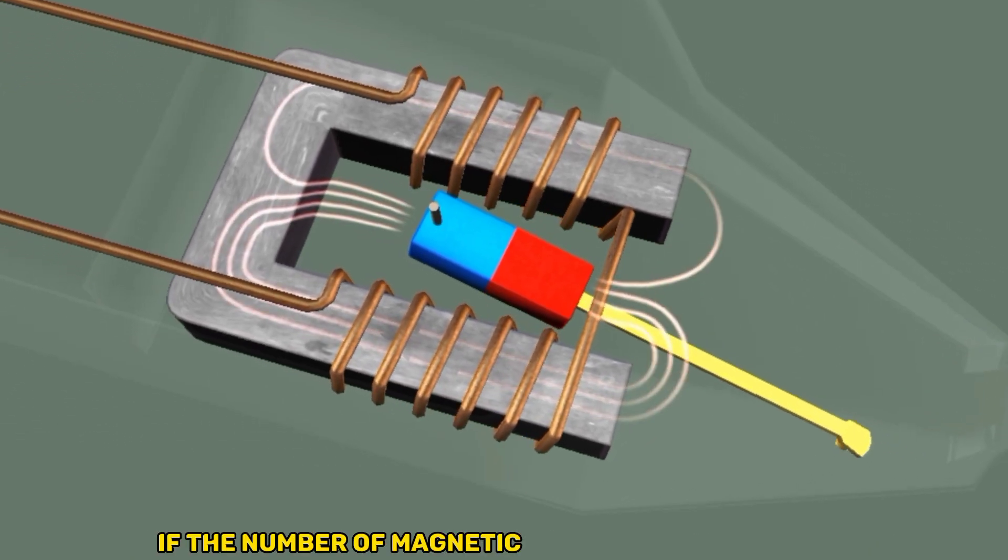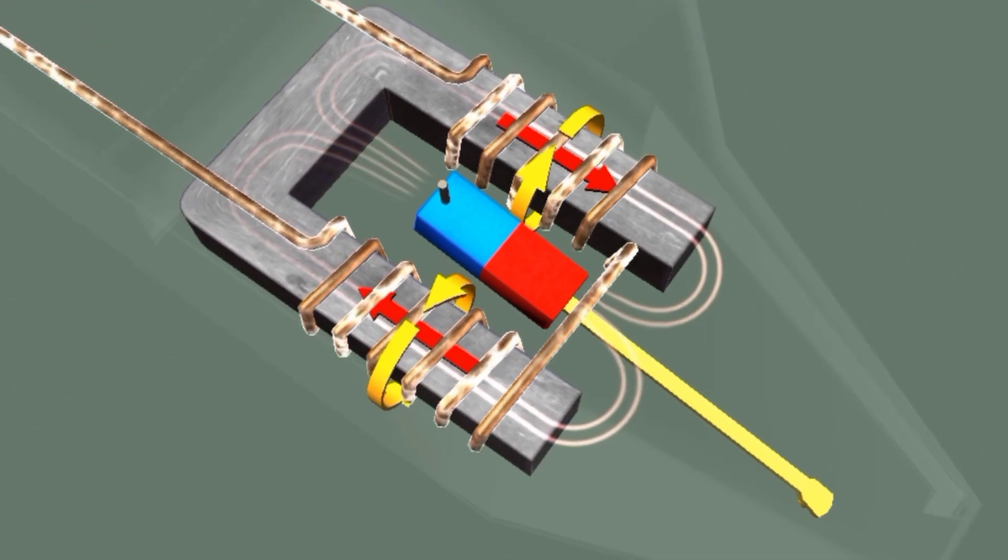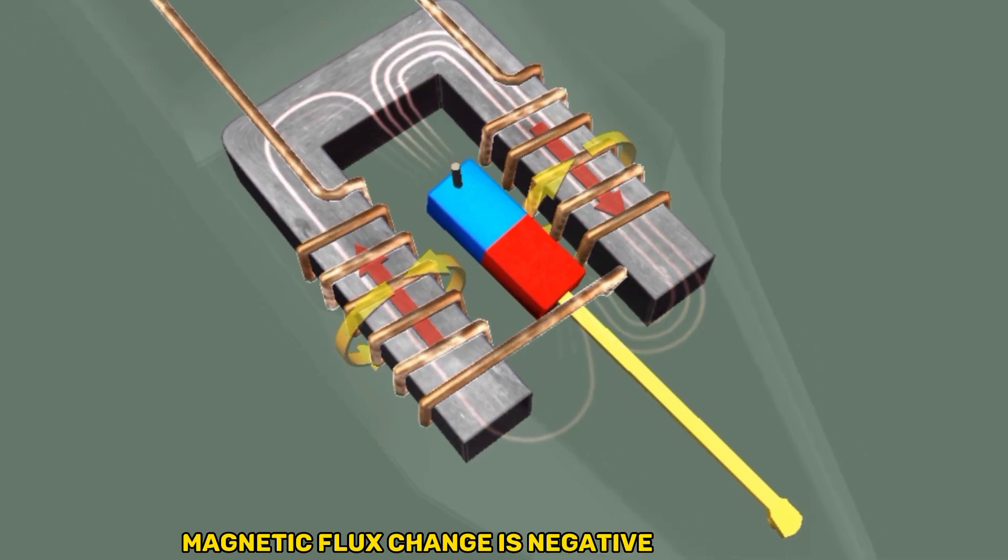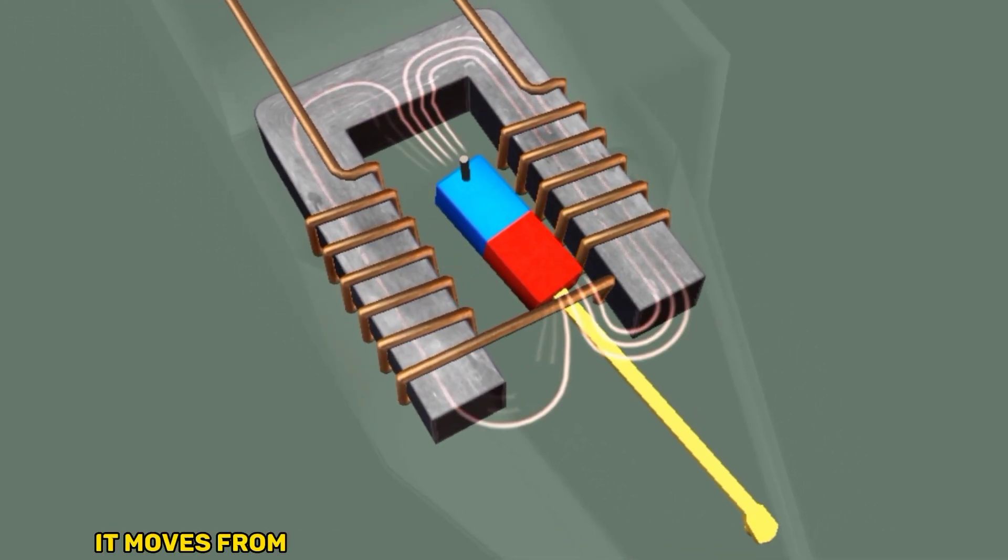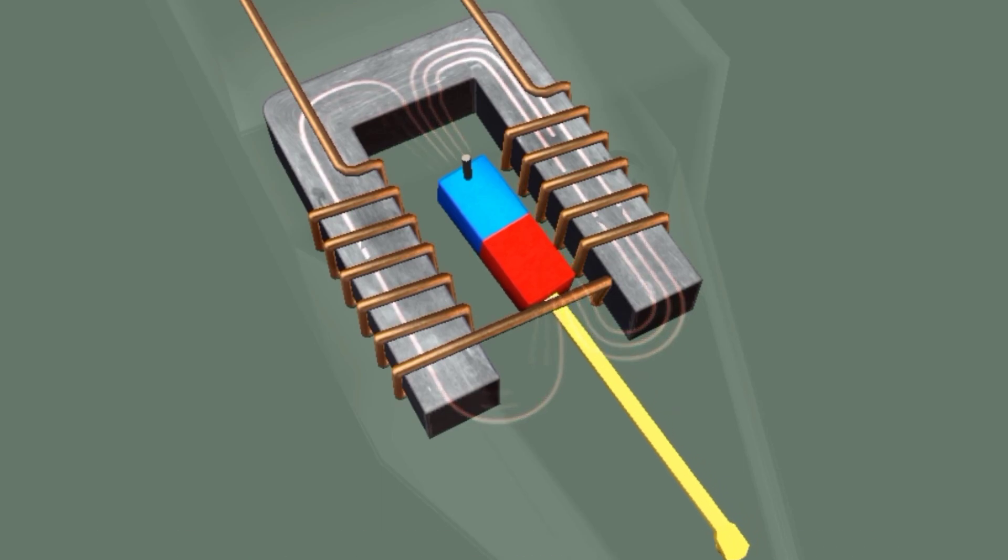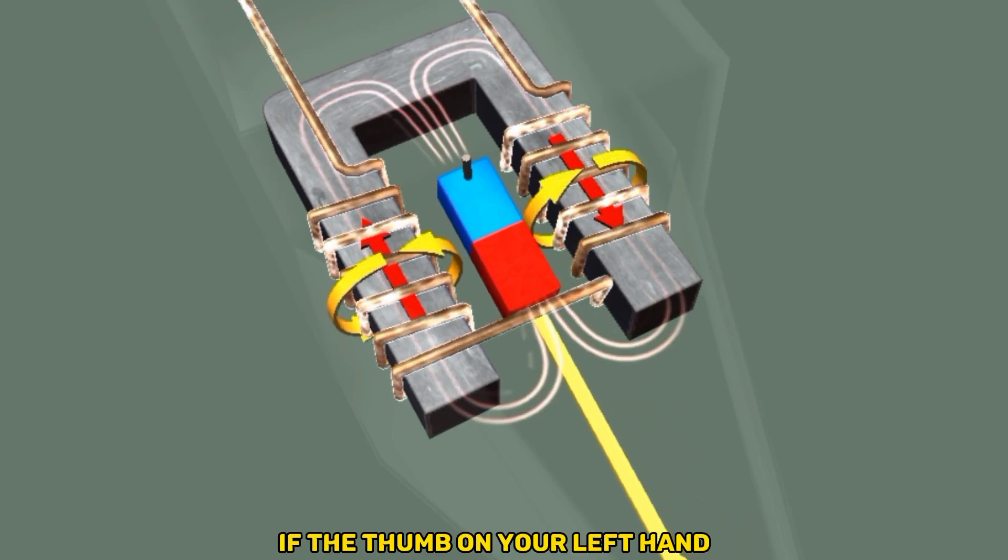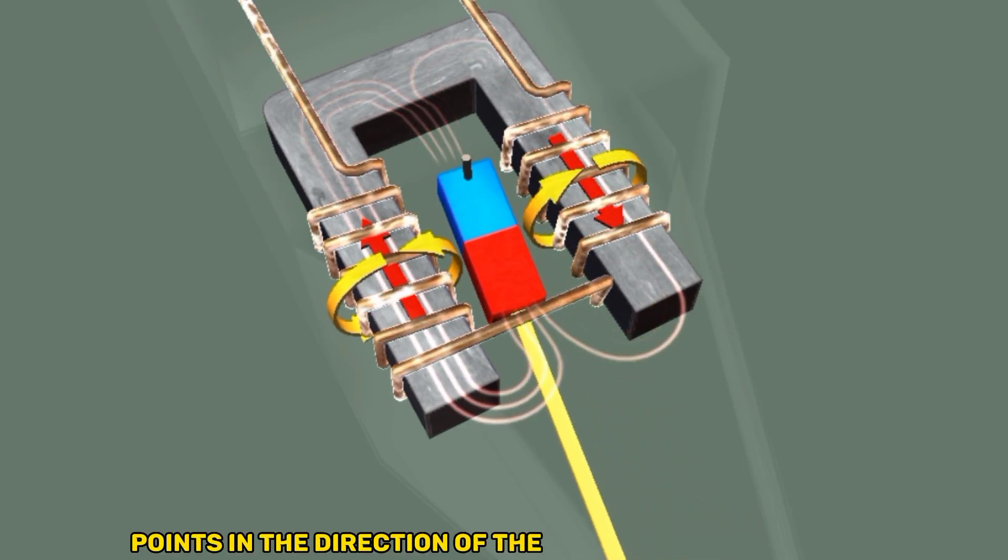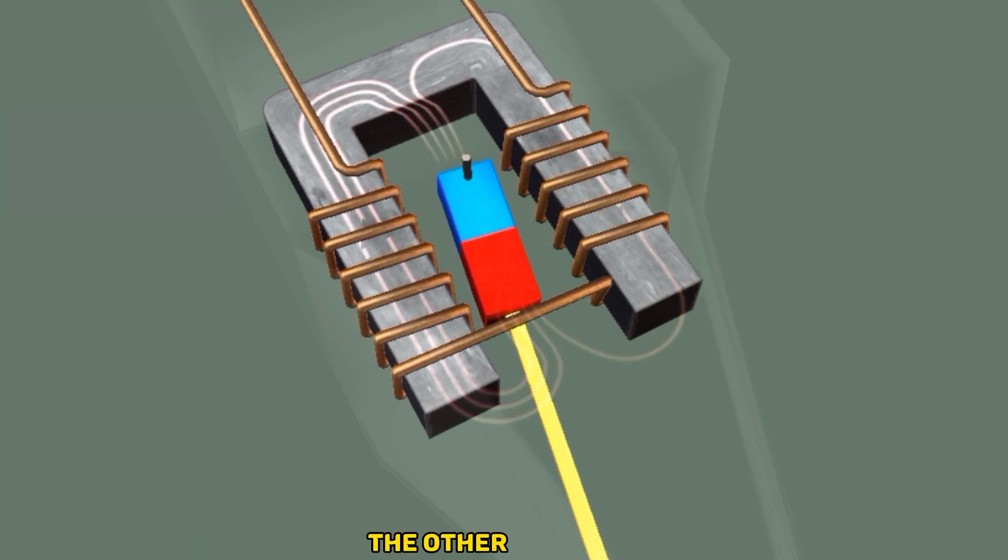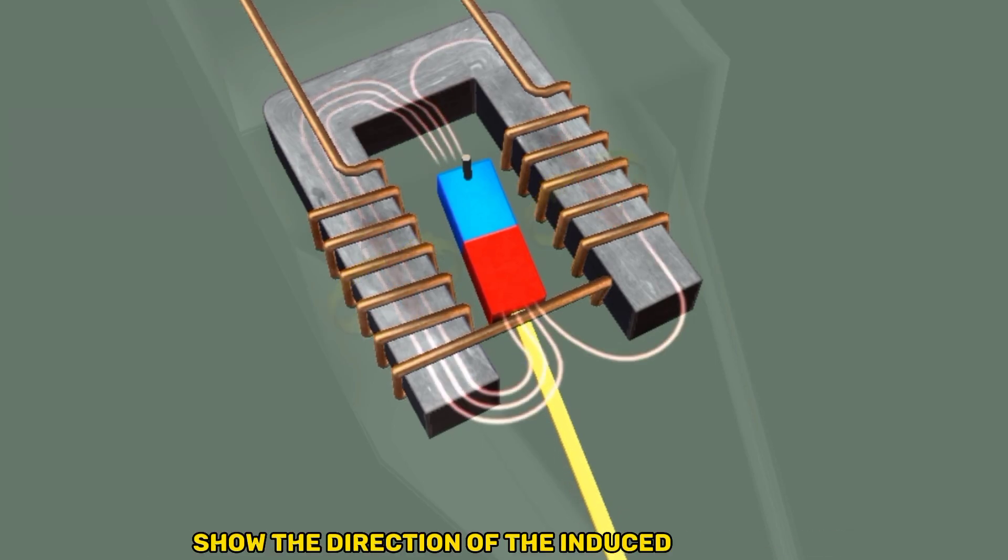If the number of magnetic field lines decreases, magnetic flux change is negative. Therefore, it moves from the magnetic south pole to the north pole. If the thumb on your left hand points in the direction of the magnetic flux change, the other fingers show the direction of the induced current.